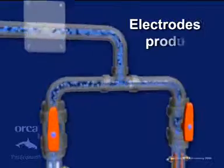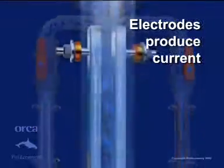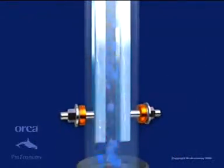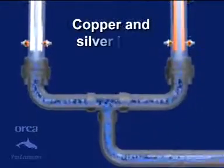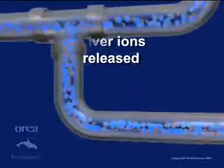The ORCA control unit passes a low DC current between two copper and two silver electrodes. The current causes the release of electrically charged copper and silver, called ions, into the flowing water.